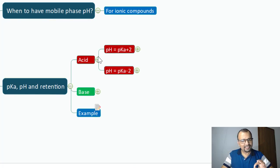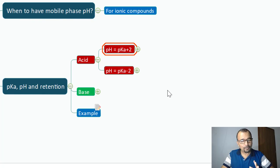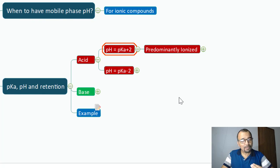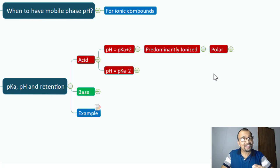The given compound is acidic in nature. If you know the pKa of the compound and you adjust the pH of the mobile phase equal to pKa plus 2 — for example, if the pKa of the compound is 6, then your pH becomes 8 — what is going to happen? In this pH, you are going to have predominantly almost 99% of the compound in an ionic state. It will be an ionic compound, which means it is in a highly polar state.